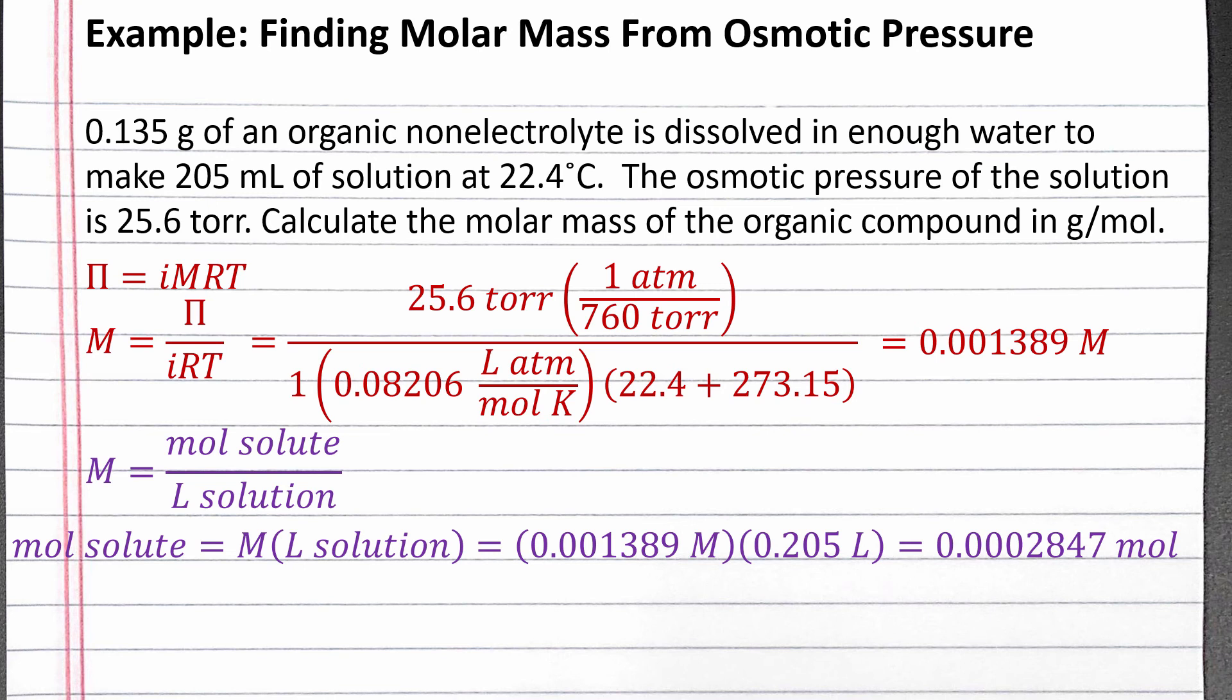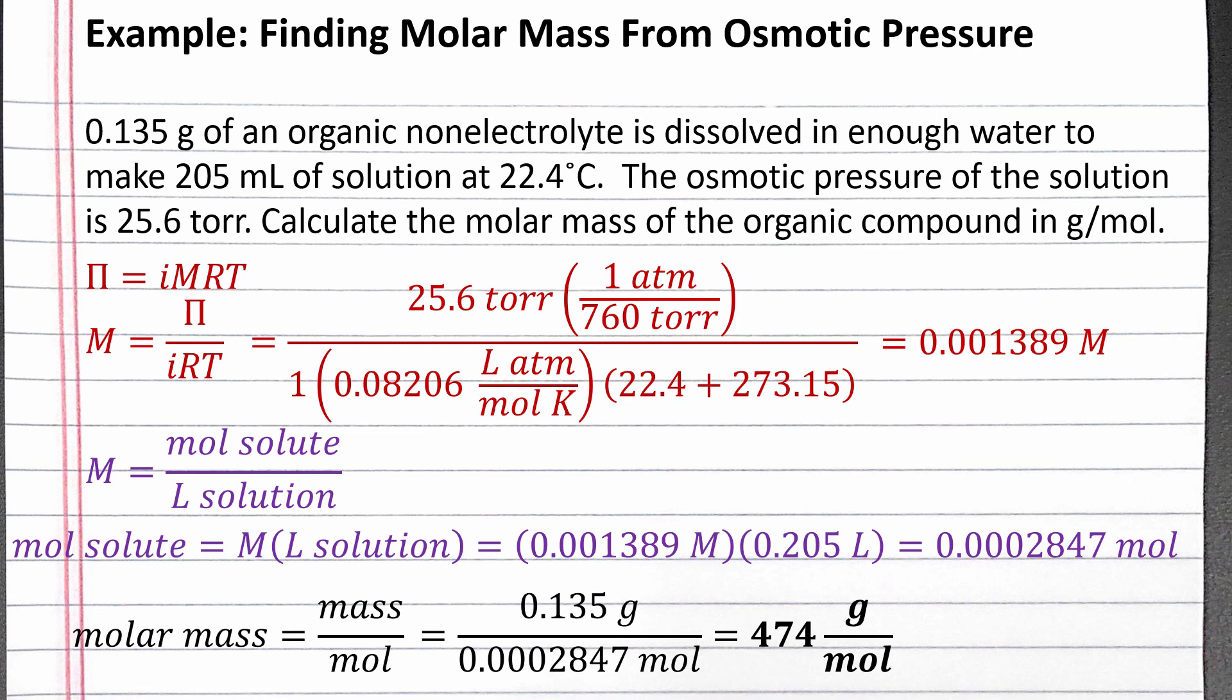To calculate the molar mass, we divide the mass in grams by the moles we just calculated. Completing this calculation, we get 474 grams per mole for the molar mass of the organic compound.